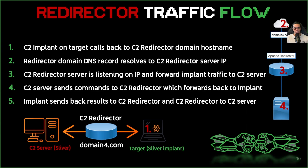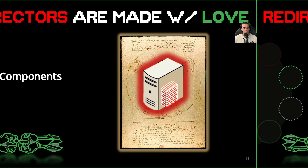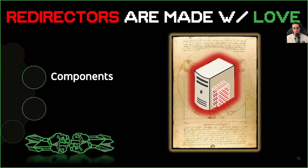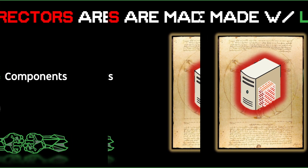Ideally, forwarding of non-C2 traffic to other non-suspicious sites is performed — this can be done with the reverse proxy C2 redirection method. So what are the C2 redirectors made up of? Let's describe the basic components of a C2 redirector deployment now.